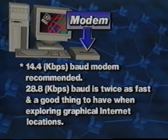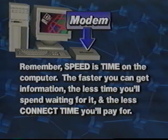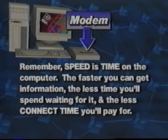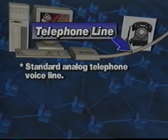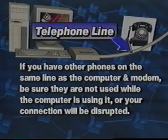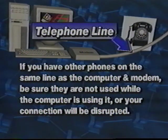There are even faster modems being sold now, so check with your dealer. Remember, speed is time on the computer. The faster you can get information, the less time you'll spend waiting for it, and the less connect time you'll pay for. Our next item is a telephone line. This will give us the communication path into an Internet access point. Suzanne is using a standard analog telephone voice line. If you happen to have any telephone extensions in the house, make sure nobody picks up another receiver while our computer is using it, or your connection will be seriously disrupted.